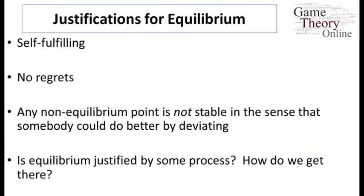Let's talk about why Nash equilibrium might be justified, at least in some circumstances. The basic point of an equilibrium concept is that it's self-fulfilling: if each person anticipates that others will play according to the equilibrium strategies, then there's nothing better they can do for themselves. By definition, each player is maximizing, meaning there's nothing better they can do. That doesn't mean there's nothing better the whole society can do — we saw that in the Prisoner's Dilemma — but each individual can't do better than the prescribed strategies. It also means that players don't have any regrets after the fact and wouldn't want to go back and change their strategy.